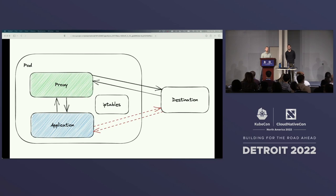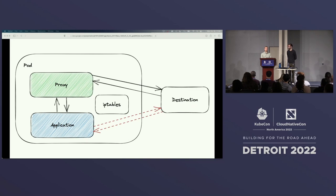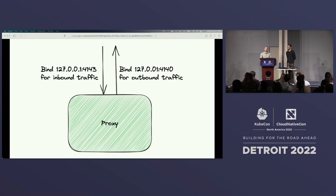Instead of going directly to the original destination, inbound and outbound traffic first passes through the proxy container. The proxy has different behavior depending on the direction of traffic, so it binds a separate port for each direction. The proxy container binds port 4143 for inbound traffic and port 4140 for outbound traffic. IPTables has separate rules that rewrite the destination address fields to these ports depending on the direction. Note these are the actual ports used in Linkerd.